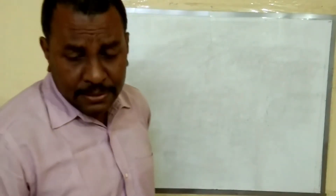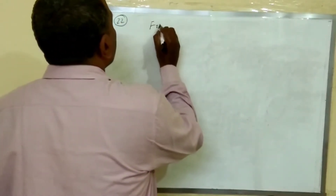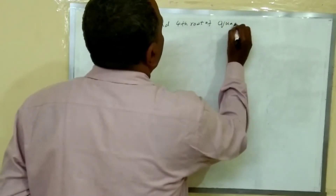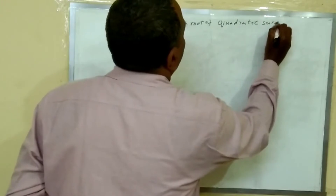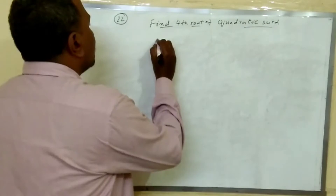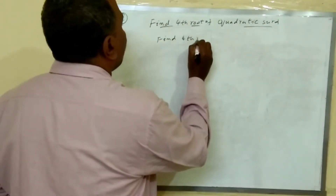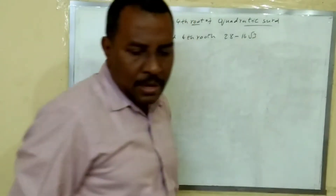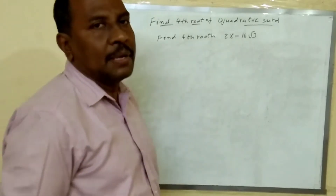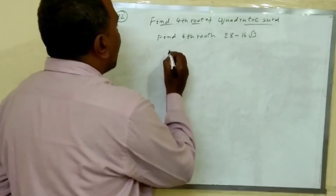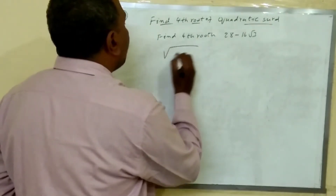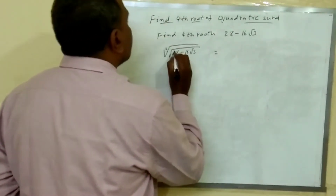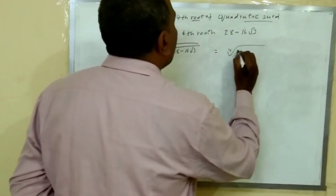Today our topic is about how to find the fourth root of a quadratic surd. We will take one example. Find the fourth root of 28 minus 16 root 3. What do you mean by finding the fourth root? This is equal to the square root of the square root of 28 minus 16 root 3, because square root of square root gives the fourth root.